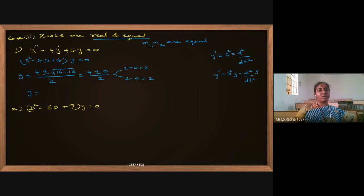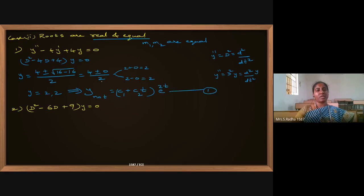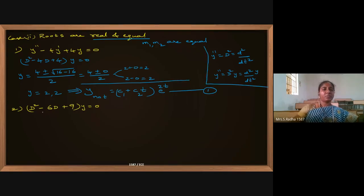The roots are D = 2, 2. For real and equal roots, the natural response is written as: y_n = (c1 + c2·t)·e^(2t). This is equation 1 — the natural response for the given question.